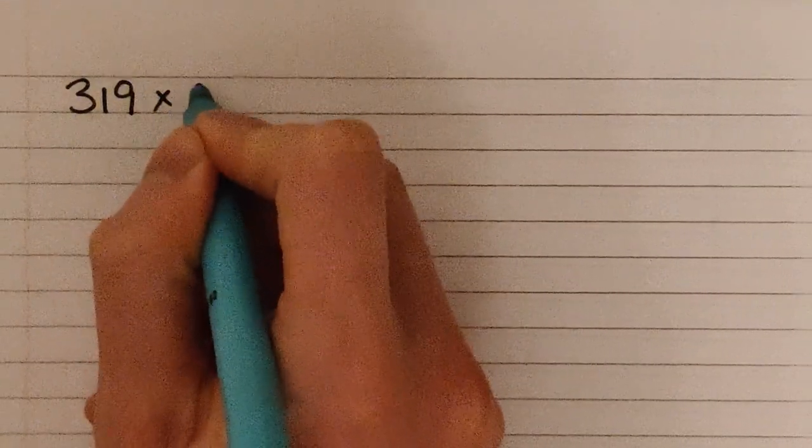Hi guys, this is just a quick video to help with today's maths in case any of you need it. Today we're going to be looking at two ways to do the multiplication 319 times 5. This is the first example in the lesson materials.